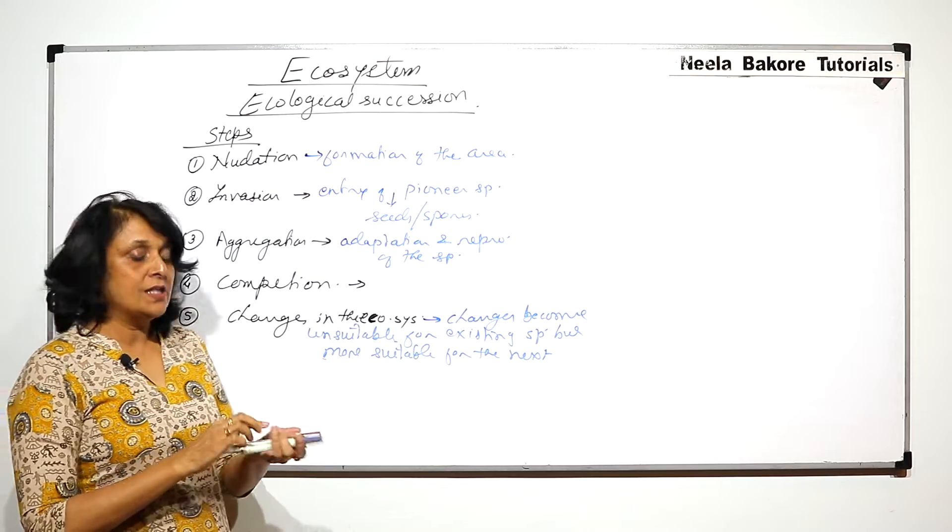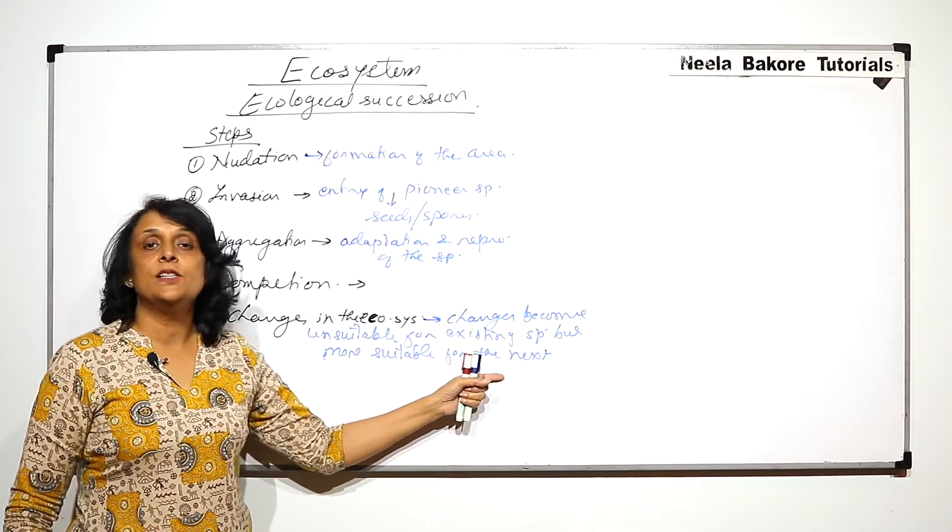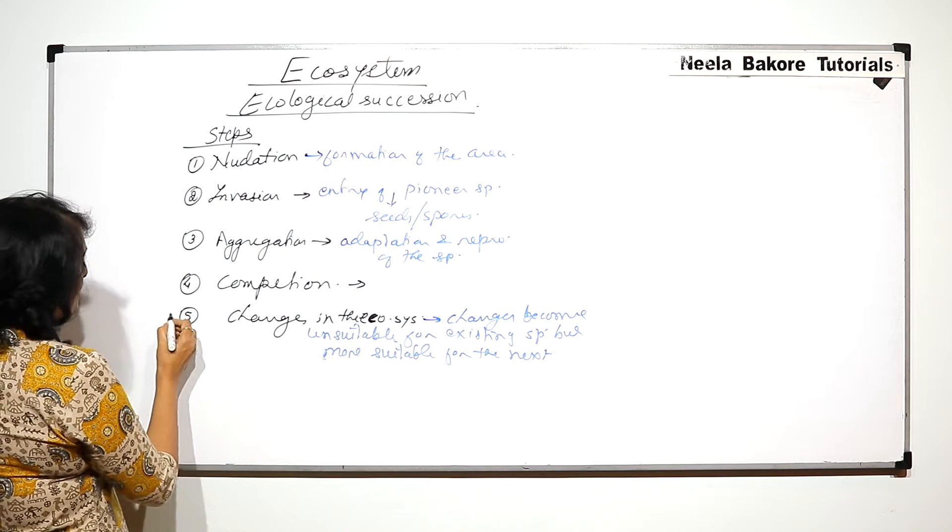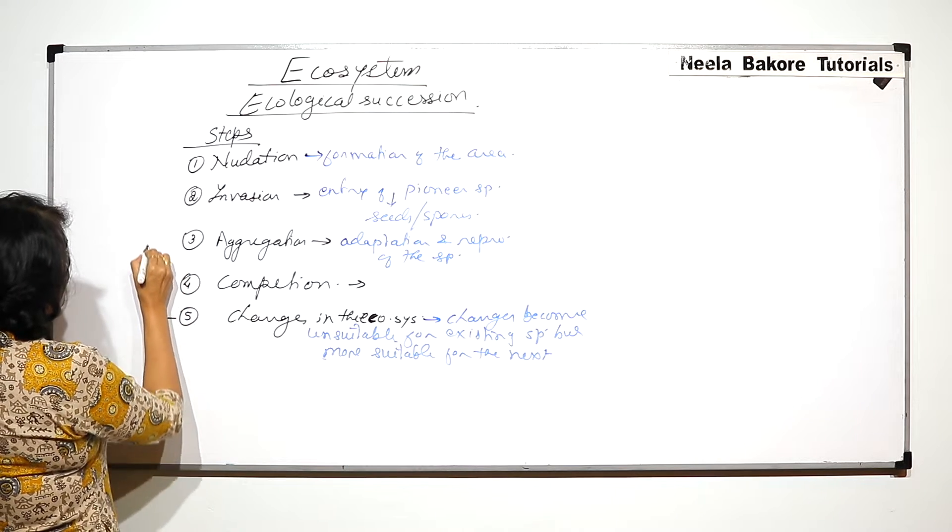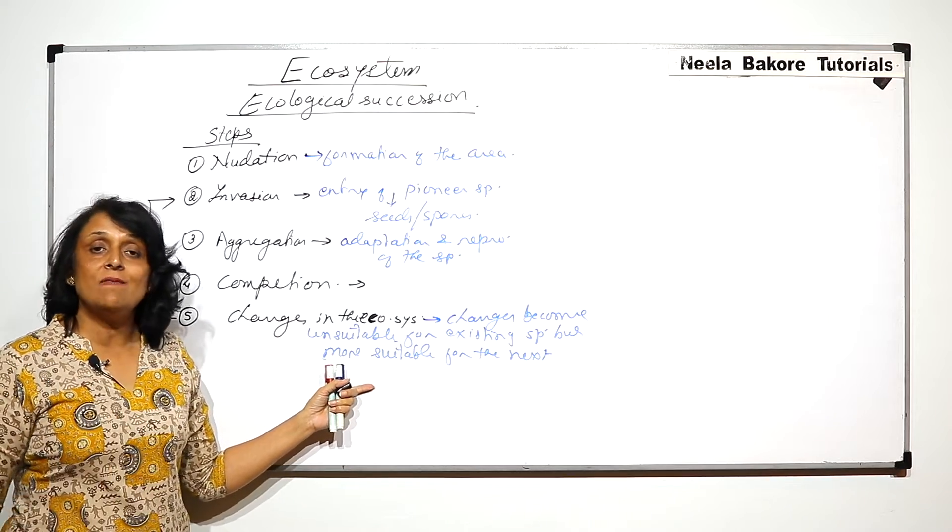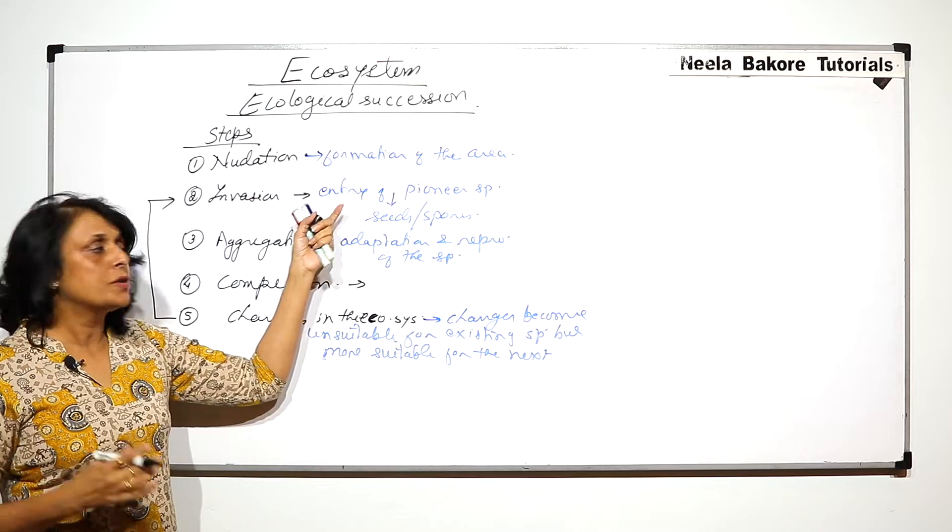Now if these changes are brought about that means the conditions are going to change. Next species will invade. That means from step number 5 it will again go to step number 2. So next species invades in the form of spores or seeds.